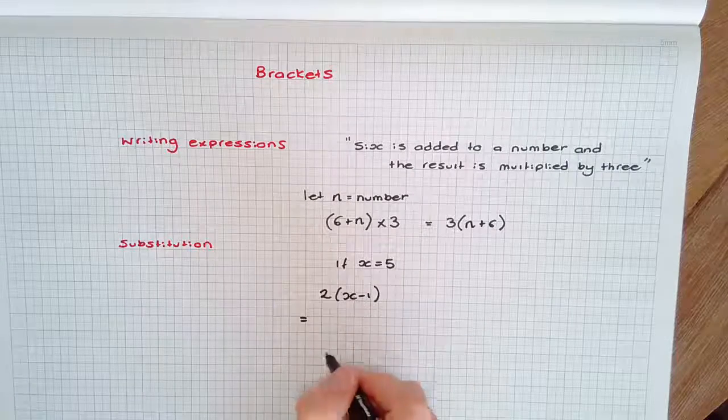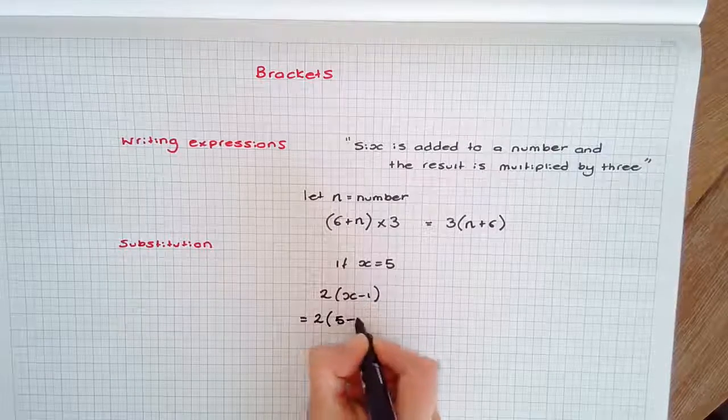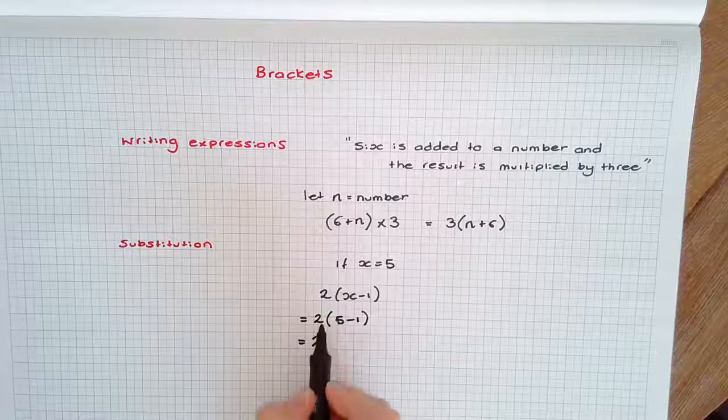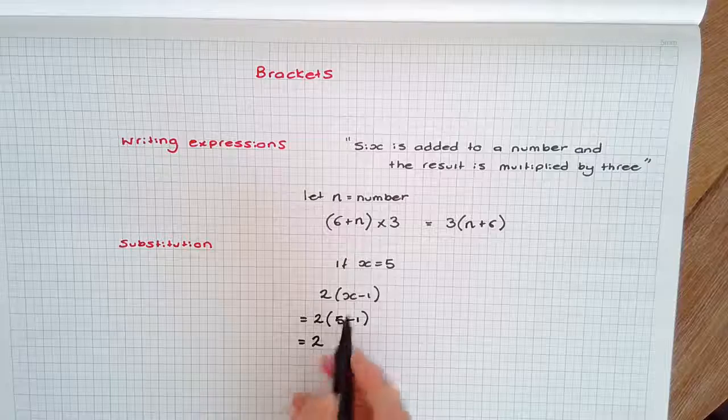It would be 2 bracket, replacing x with 5. Now completing the bracket first, it would be 2 times 4. Remembering we've omitted the multiplication sign between 2 and the bracket, it would become 2 times 4, which is 8.